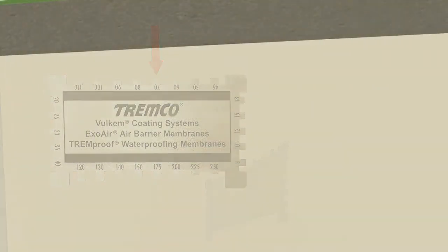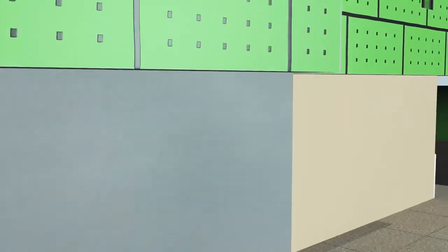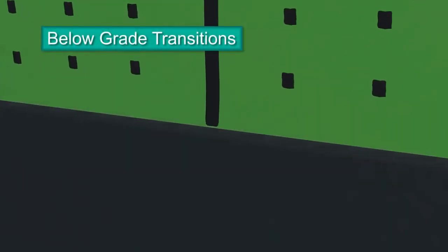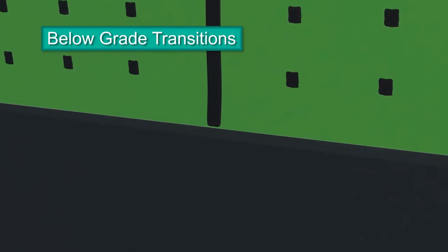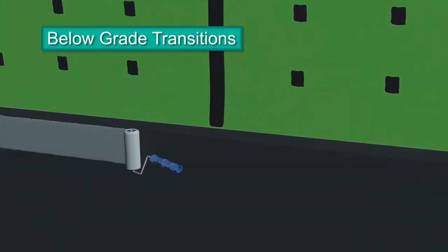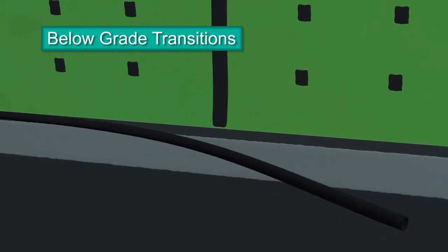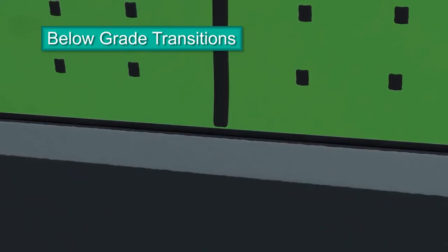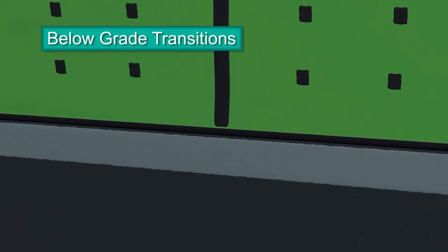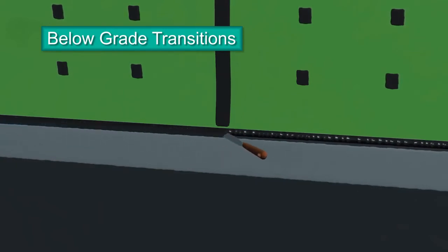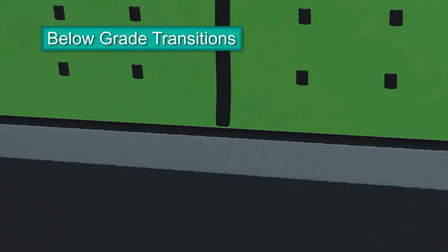When it comes to properly enclosing a building envelope, transitioning from below-grade to the vertical wall is equally important. Start by priming the below-grade waterproofing membrane with Tremco's Epoxy Primer. Roll the primer a minimum of 3 inches onto the waterproofing membrane. Insert backer rod into the gap between the panel and the below-grade foundation. It should be recessed a maximum of one-half inch. Using a standard caulk gun, apply a bead of Dimonic 100 sealant over the backer rod and tool smooth so it extends from the panel to the below-grade membrane. Roll or spray ExoAir 230 fluid membrane onto the face of the panel over the sealant and onto the epoxy primer, a minimum of 3 inches.